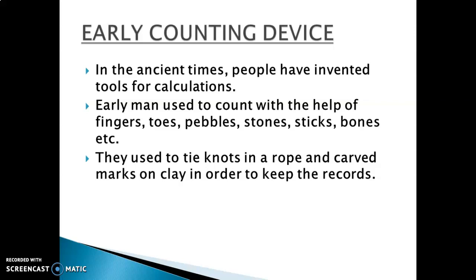First of all, we will study about the early counting devices. In ancient times, people invented tools for calculations. The tools they used were fingers, toes, pebbles, stones, sticks, and bones. These were the tools used for doing calculations. They also used to tie knots in a rope and carve marks on clay in order to keep records.